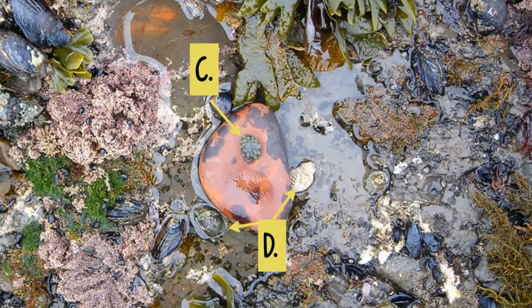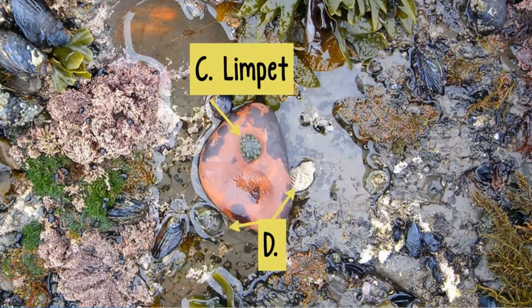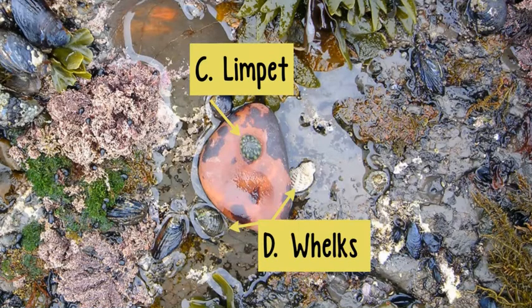All right, let's look at C. What do you think C is? C is a limpet. Great job. Now let's look at D. What is D pointing to? Those would be whelks — remember, they have the two points on their shell.